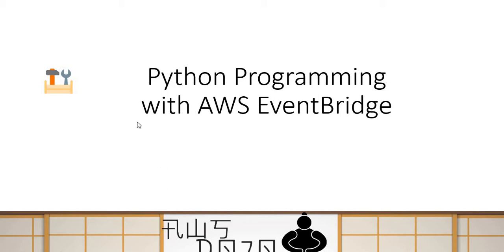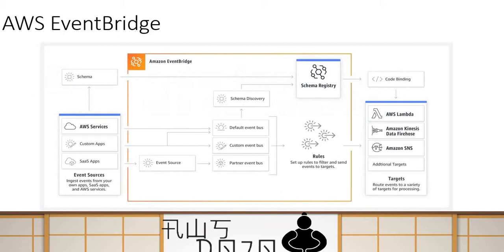Let's get a slight understanding about what EventBridge is and how it works. EventBridge is a serverless event bus, which can be used to create a publish-subscribe based messaging engine. If you try to understand some of the key components of EventBridge — to start with, the central point of EventBridge is an event bus. It comes with a default event bus, but you can create your custom event bus or create an event bus for your partners. The purpose of the event bus is to be a place where messages can be published.